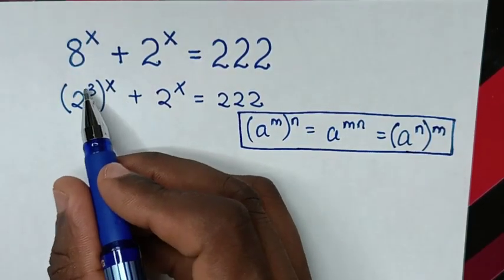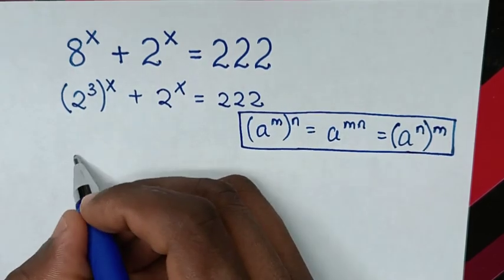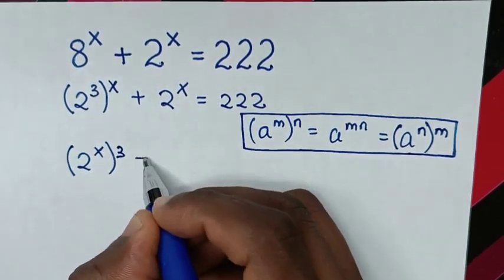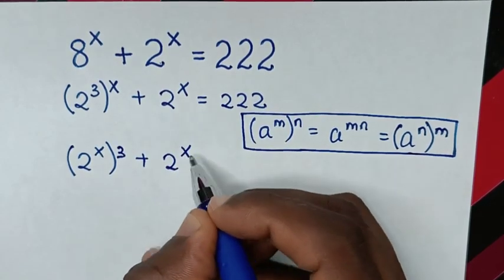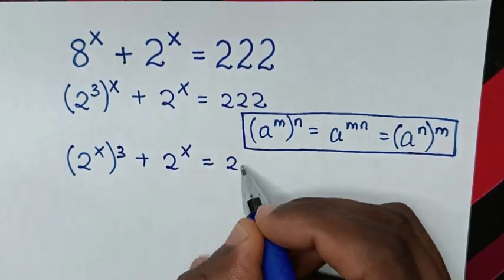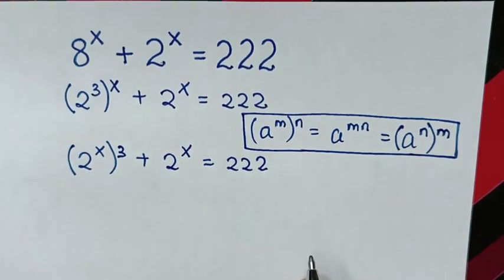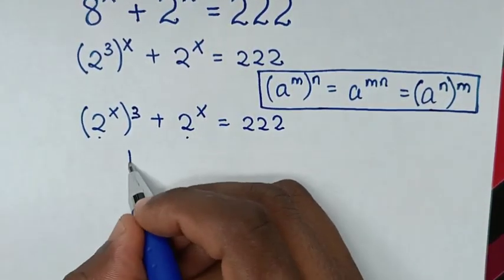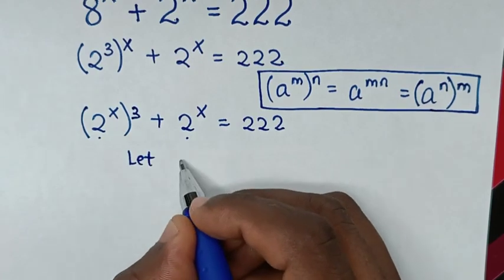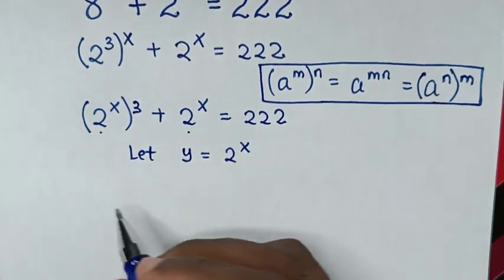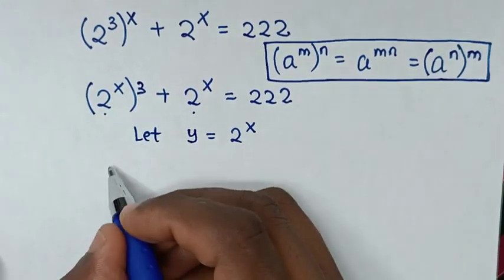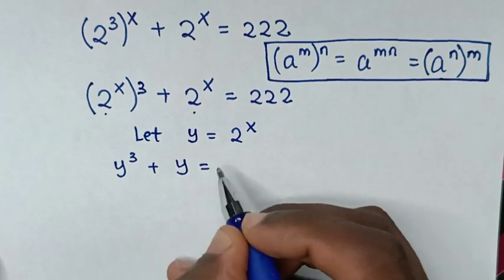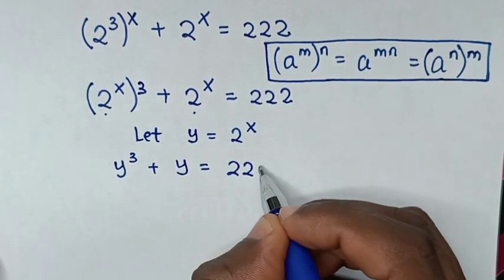We exchange the powers so that x is inside the bracket and 3 is outside, giving us (2^x)^3 plus 2^x equals 222. Then, since 2^x is common, we let y equal 2^x, so the equation becomes y cubed plus y equals 222.